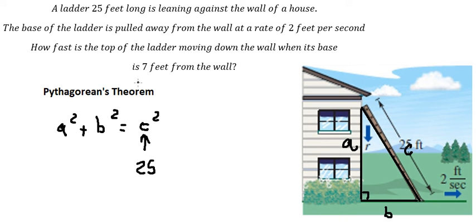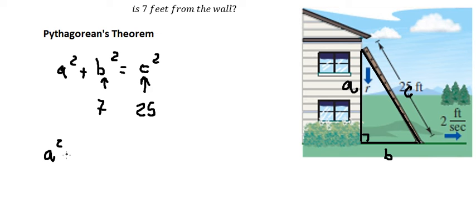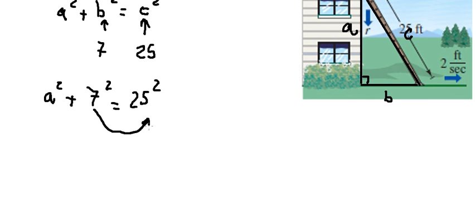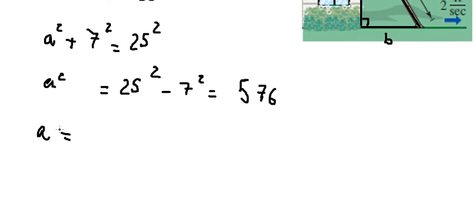We need to find B, that is 7. And A, we need to find. So I will put 7 squared on the right side. We calculate this, and that is 576. Now we put the square root on both sides, and this equals 24.